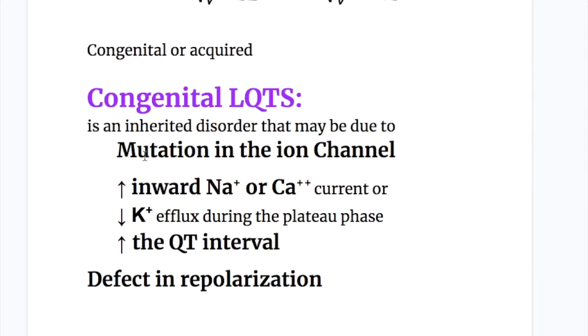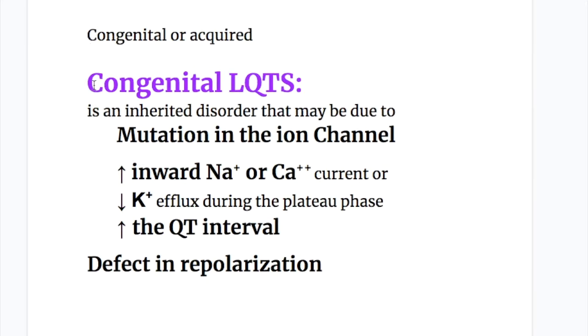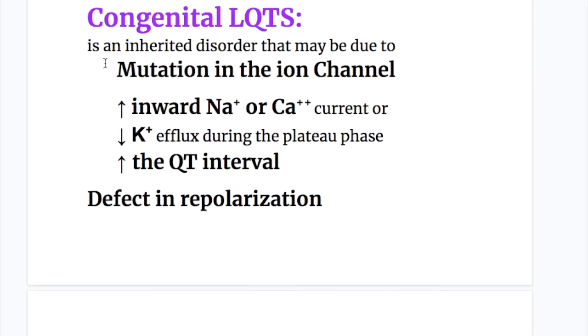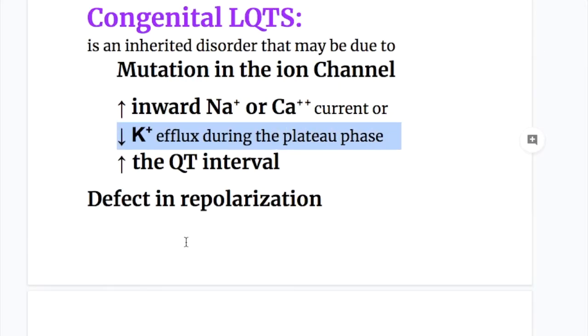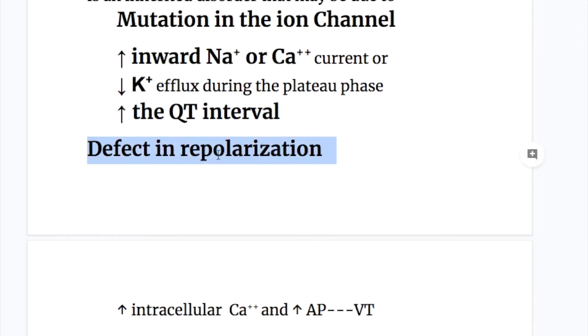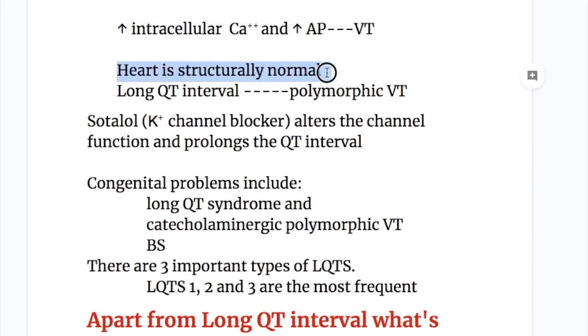There are two types of QT syndromes: congenital or acquired. Let's discuss the congenital LQT syndrome. The congenital LQT syndrome is an inherited disorder that may be due to mutation in ion channels. What's the mutation? Number one: there is increased inward sodium or calcium current. Number two: there is decreased flux of potassium during the plateau phase that causes increase in QT interval. So this is a defect in the repolarization. There is increased intracellular calcium and that increases the action potential and that leads to ventricular tachycardia. So the basic pathology in the channelopathy is increased sodium or calcium current and decreased flux of potassium. Heart is structurally normal in LQTS.